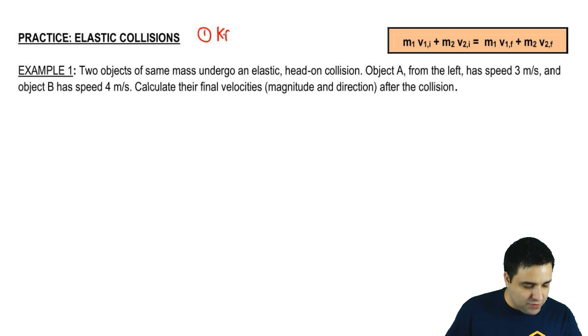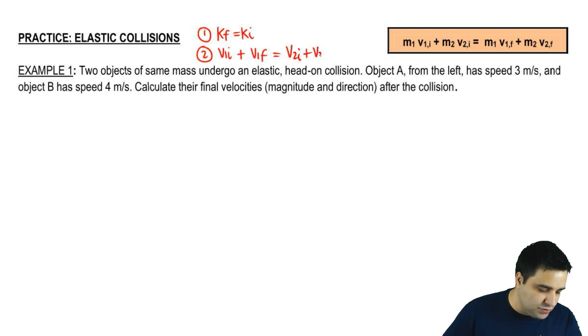So k final equals k initial. And two, we can use an extra equation, which is v1 initial plus v1 final equals v2 initial plus v2 final. I want to talk about this equation real quick. We're not actually going to use this. This is conceptual.